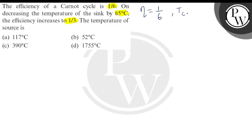Let the temperature of the sink be TC — this is the temperature of the sink — and the temperature of the source be TH — this is the temperature of the source or hot body. TC stands for cold body. So when the temperature TC decreases, that is this is Case 1.